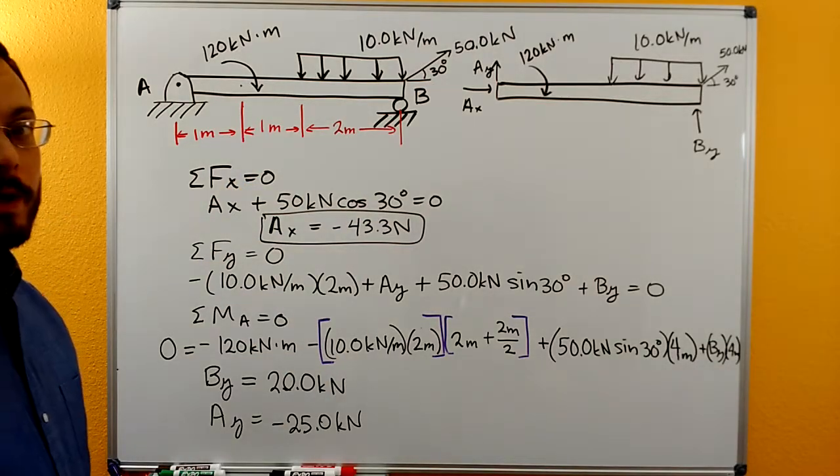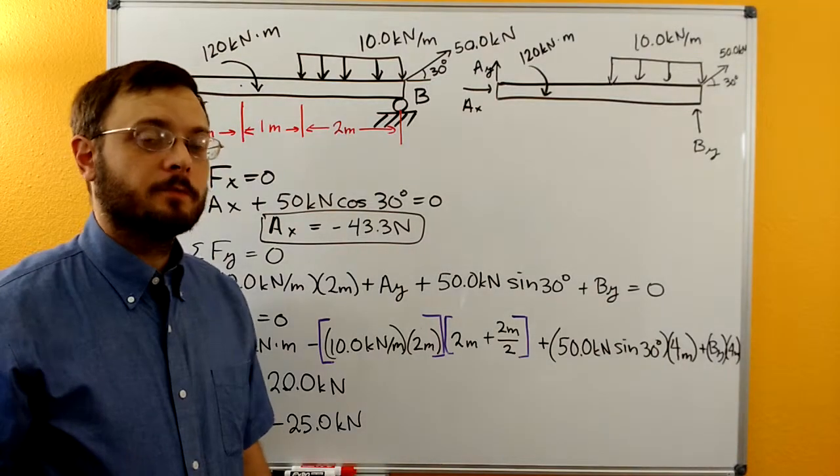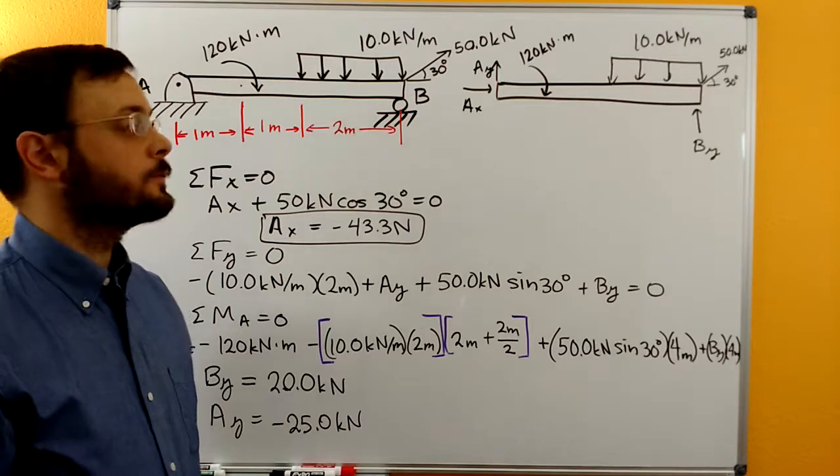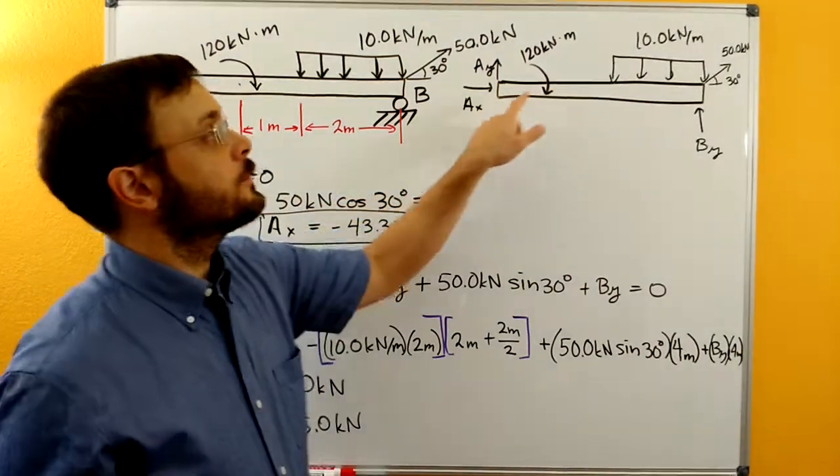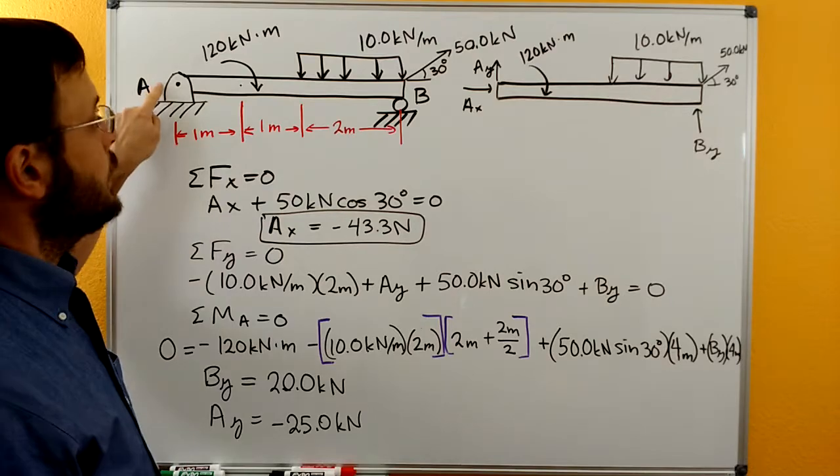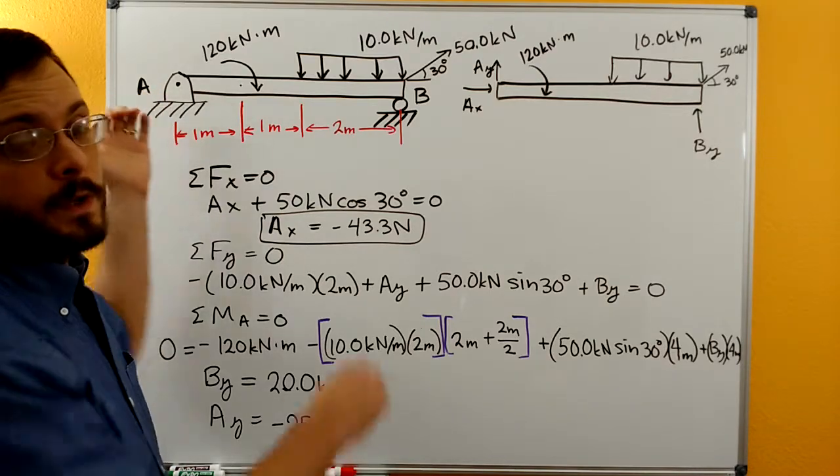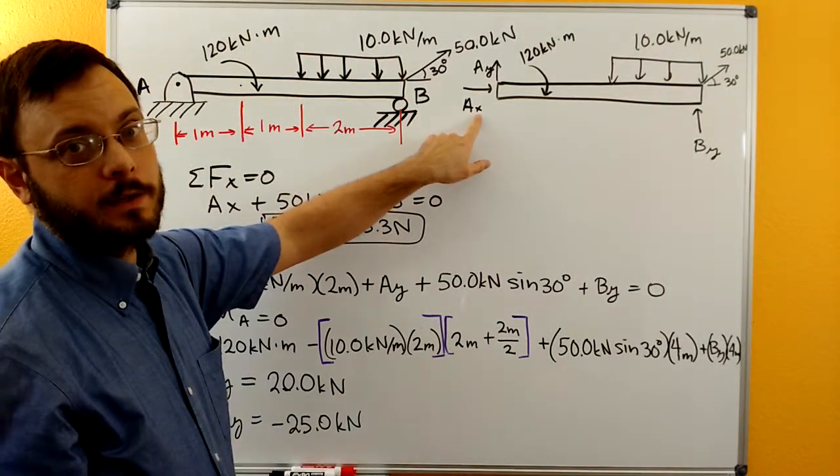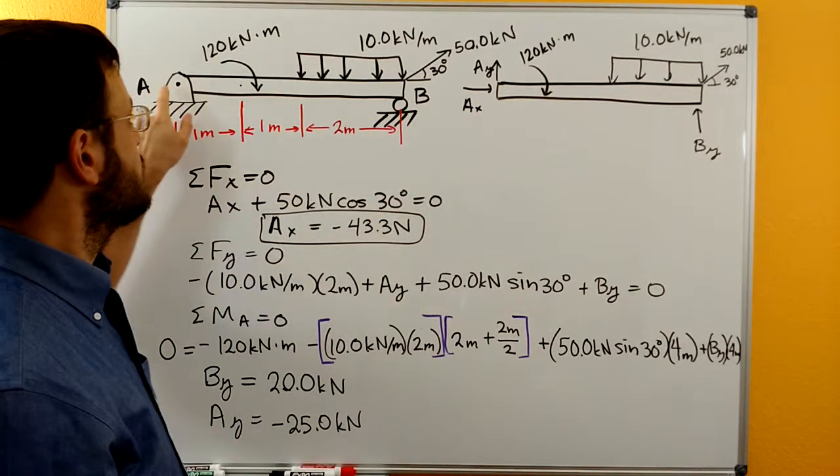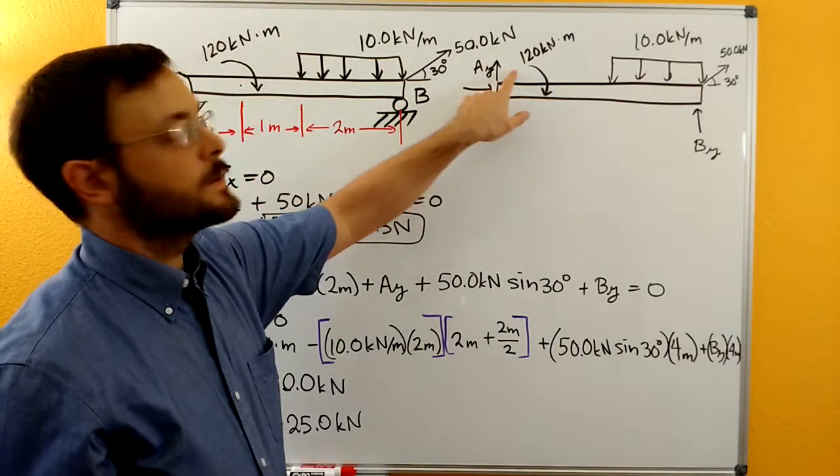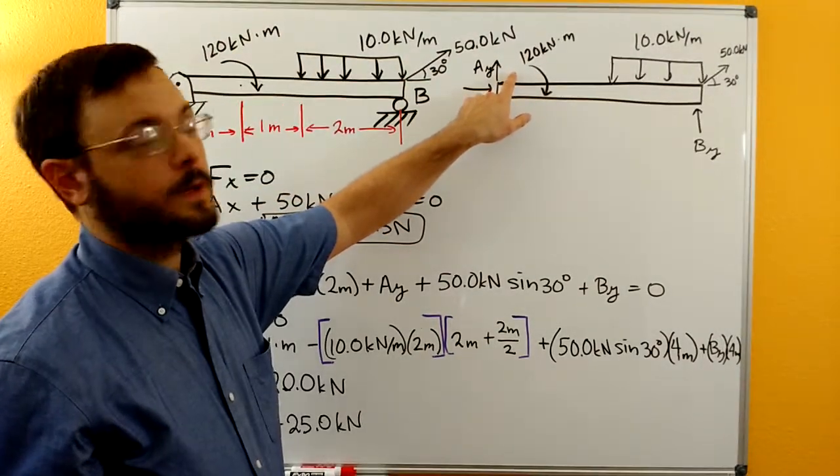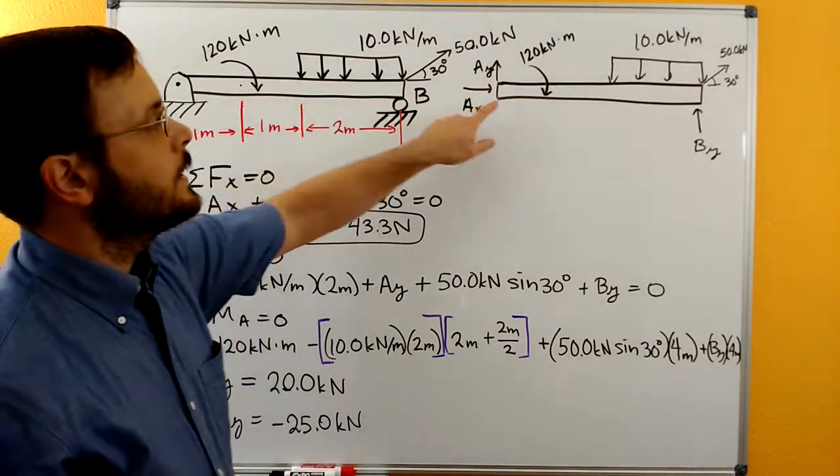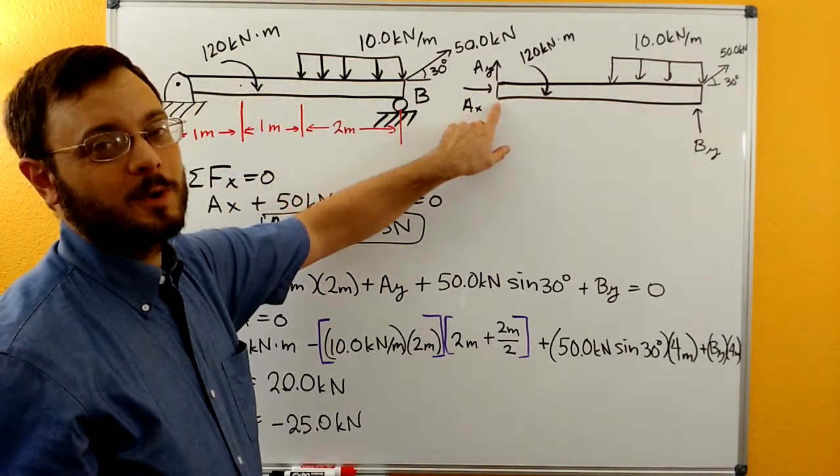So let's draw our free body diagram. Remember anytime you solve one of these equilibrium problems with rigid bodies or particles you have to draw your free body diagram. So here's our shape of our free body and then at A, thinking through this, this pin prevents us moving it in the x direction. So we have an AX as a reaction. This pin prevents us moving the bar up. So we have an AY as a reaction. But this pin doesn't prevent any rotation around A and so there's no reaction moment at A.